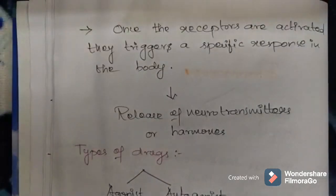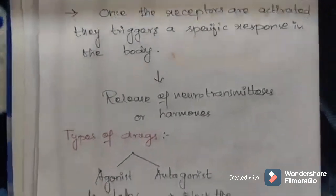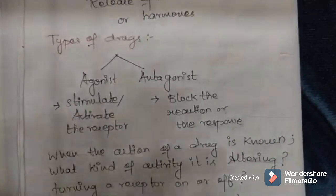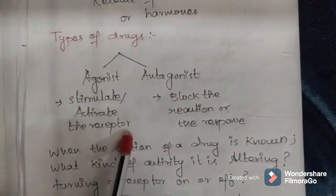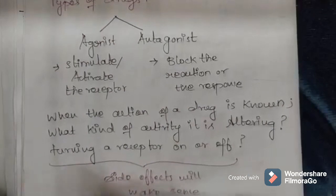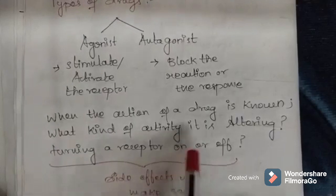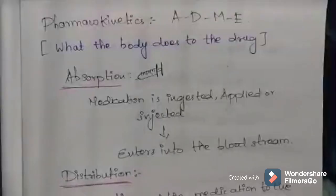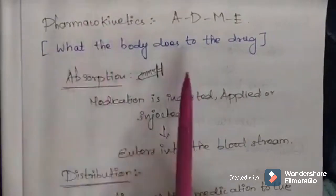That's all about receptors — I'll give a detailed explanation in my upcoming video. Moving on to types of drugs: there are basically two types, agonists and antagonists. An agonist stimulates or activates the receptor, while an antagonist blocks the reaction or response. By knowing the action of the drug, the kind of activity it is altering, and whether it turns a receptor on or off, the side effects of those drugs will start making sense.